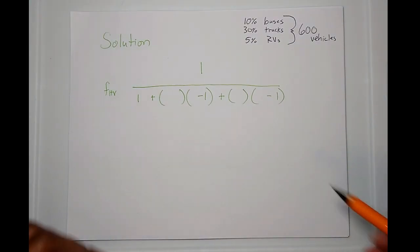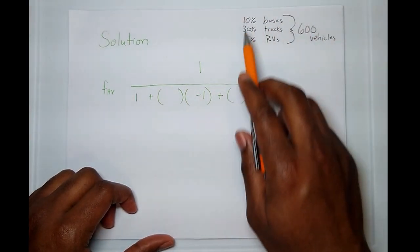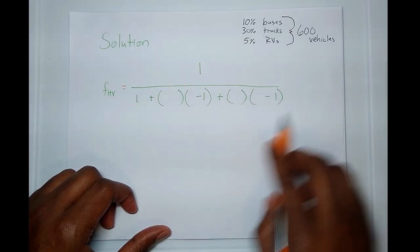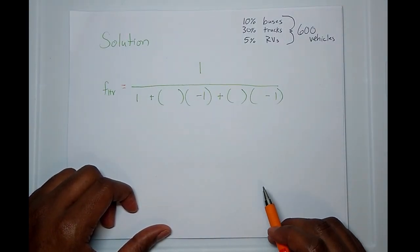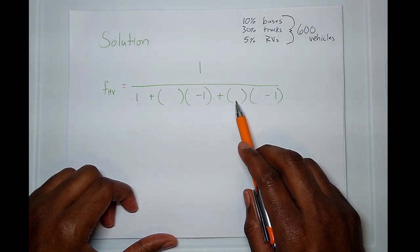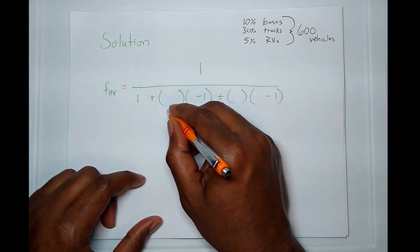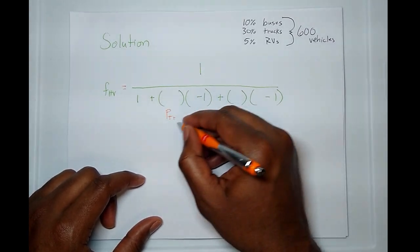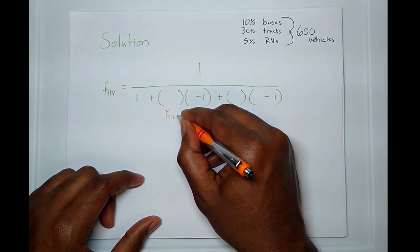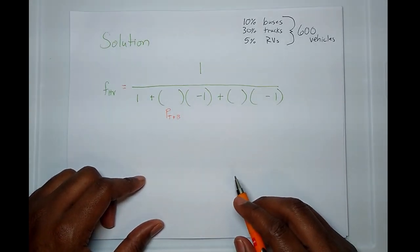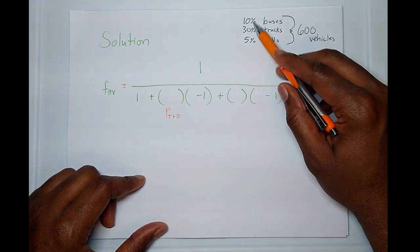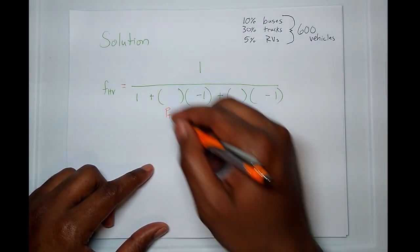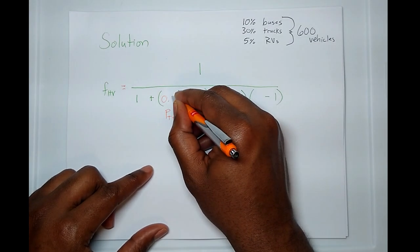Now I have the heavy vehicle factor equation written down with some open spots to fill in. P sub T represents the percentage of trucks and buses. It should really be written as P sub T and B. Looking at the given information, we have 10% buses and 30% trucks, so altogether that's 40%, written in decimal form as 0.4.